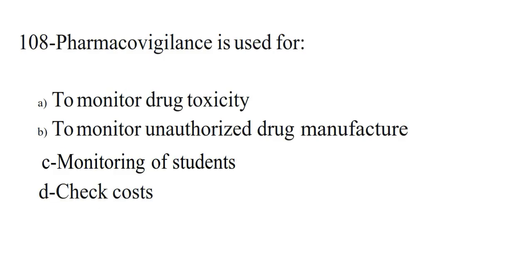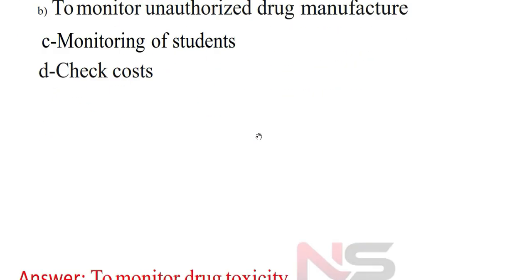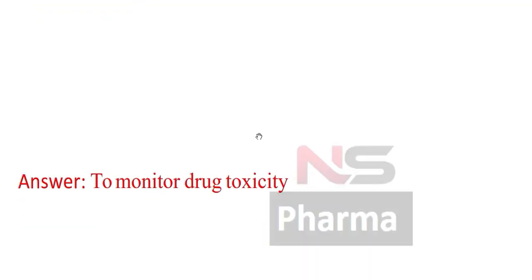Next question. Pharmacovigilance is used for: Option A. To monitor drug toxicity. Option B. To monitor unauthorized drug manufacture. Option C. Monitoring of students. Option D. Check costs. Answer: To monitor drug toxicity.